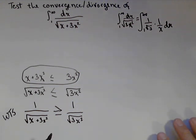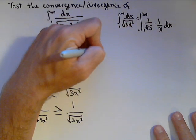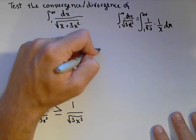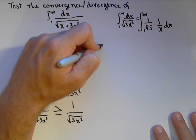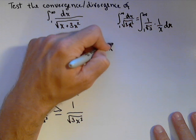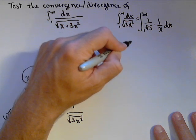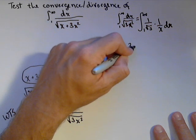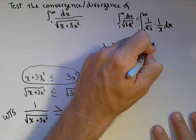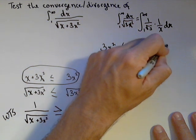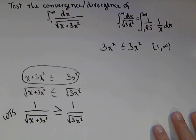This is a neat little trick that'll work. So, first statement I'm going to start with. I know that three x squared is less than or equal to three x squared from one to infinity. Okay?